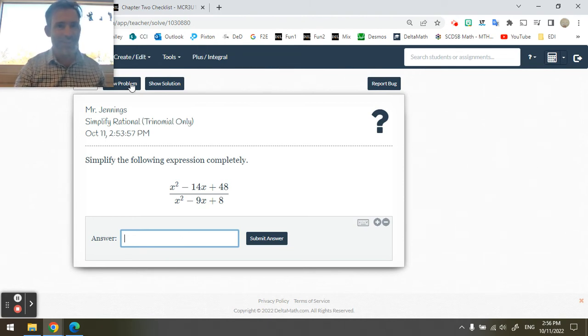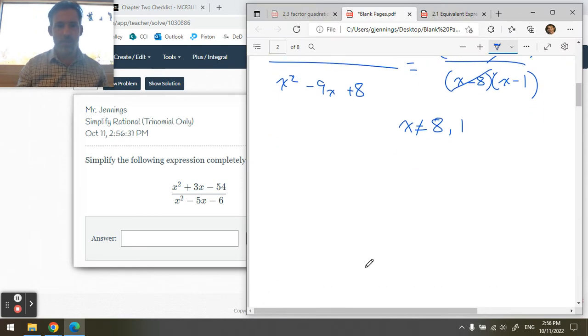Let's do another. So x squared plus 3x minus 54, that's positive 9 times minus 6. So this one is equal to x plus 9 times x minus 6. How do you do that so fast, Mr. Jennings? Well, practice. So you've got to practice too. The bottom one factors into x plus 1 times x minus 6.